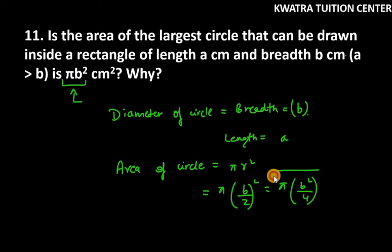We can see that this value is not equal to π b². You can clearly see and state that the given statement is false here. The area of the circle is π b² over 4, not π b².